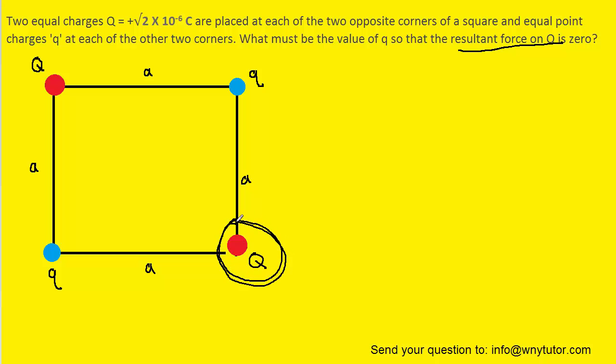Whatever we conclude about this charge will be the same for this other charge since it is the same magnitude and it is also located at the corner of the square.